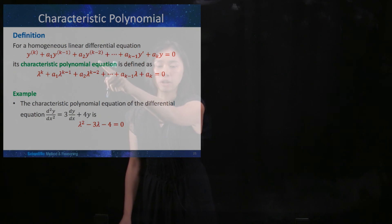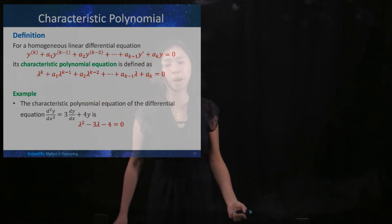So when y being differentiated k minus two times, you change it to lambda to the power of k minus two. When y being differentiated k minus one time, you change it to lambda to the power of k minus one. When y being differentiated k times, you change it to lambda to the power of k.